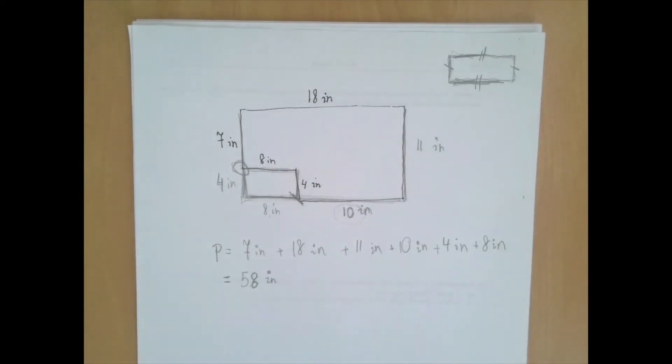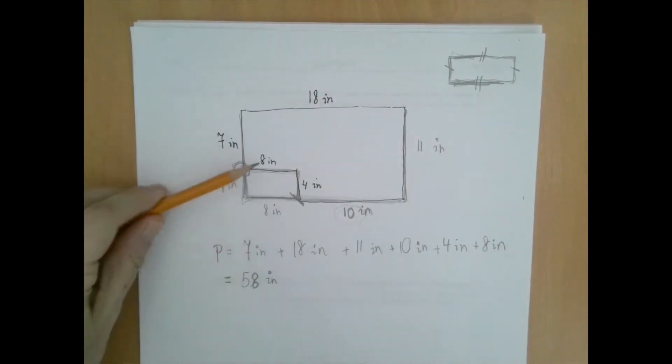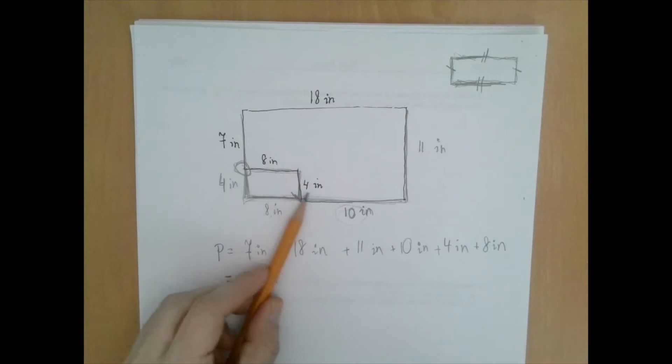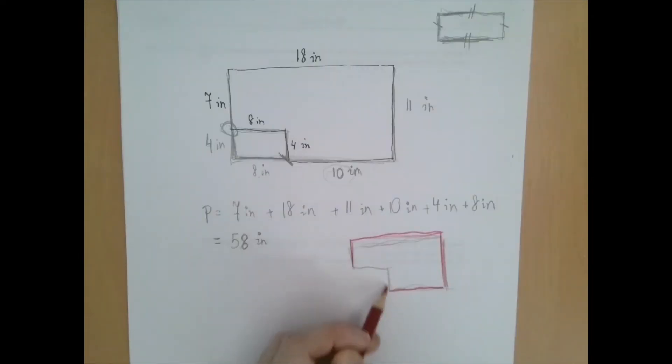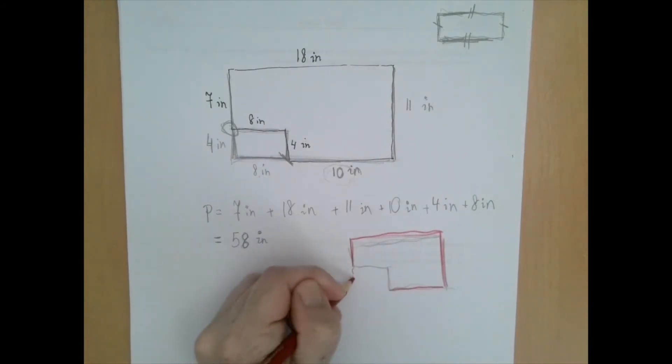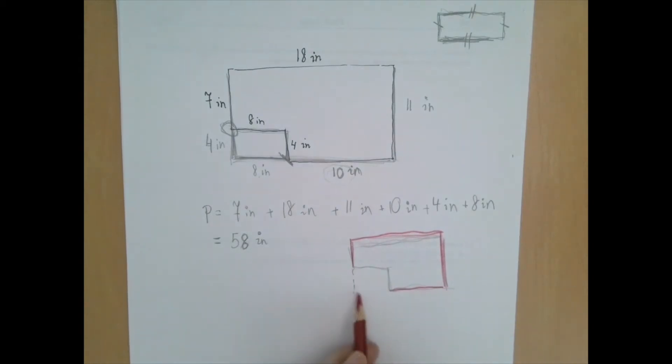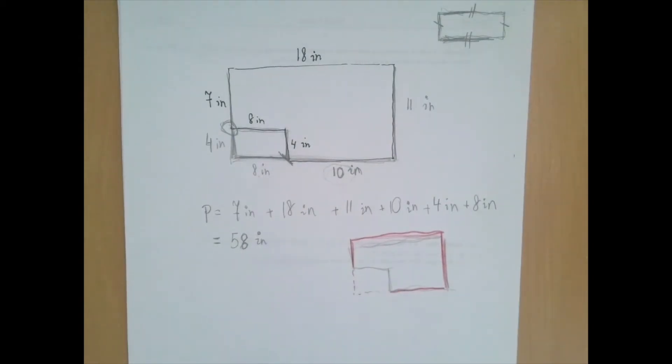So what is interesting about the perimeter is the following. If we replace this side, this 8 inches side with this side, and this 4 inches side with this side, then we do not change the length of a line segment if we just move it around. So we can move this line segment here and this line segment here. So what this tells us that the perimeter of this object should be the same as the perimeter of the full rectangle.